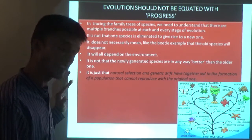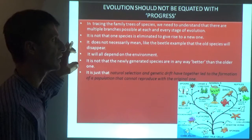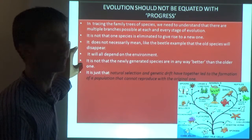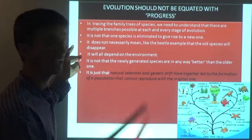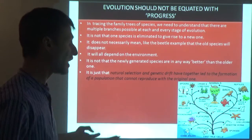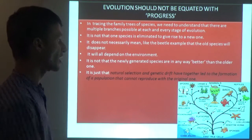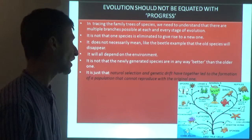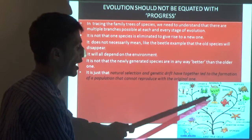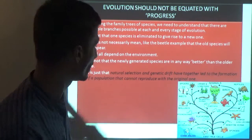It is not that one species is eliminated to give rise to a new one, nor that the new species will necessarily be better than the old. It does not necessarily mean - like the beetle example - that the older species will disappear. Whether old species disappear will all depend on the environment. It is just that natural selection and genetic drift together have led to the formation of a population that cannot reproduce with the original one.